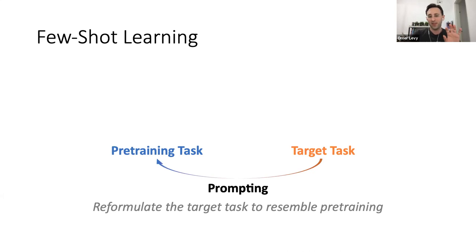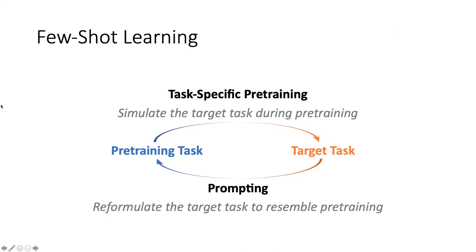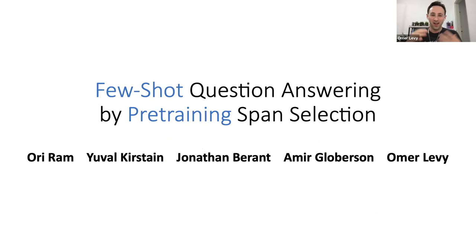In this talk, I want to focus on the other direction: task-specific pre-training. Here we're going to try and simulate the target task during pre-training using only raw text. In the first part of the talk, I'd like to focus on some first steps that we've done in this area of task-specific pre-training, done at Tel Aviv University, where we introduced a new pre-training task that makes it possible to train good question-answering models with only a couple hundred examples.